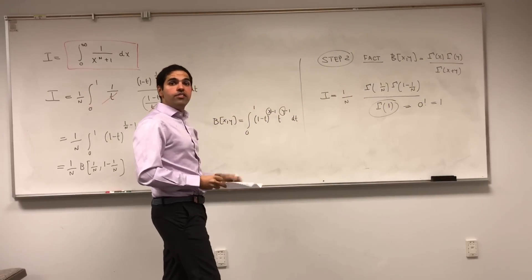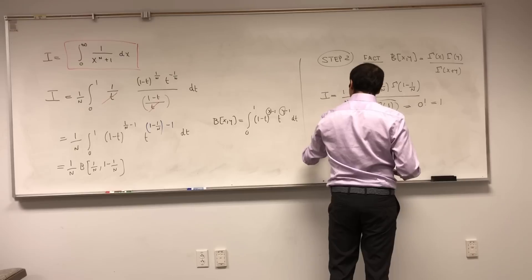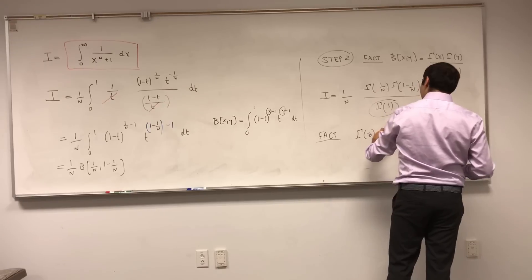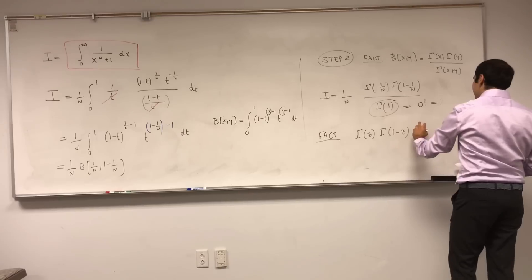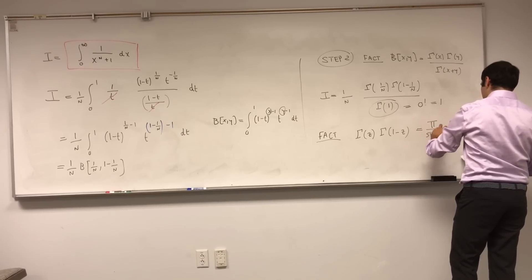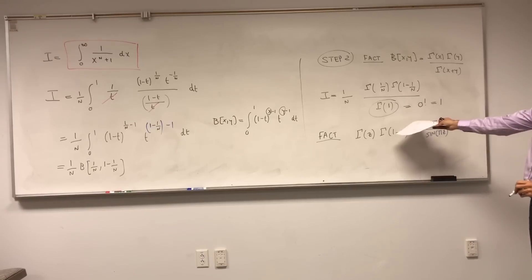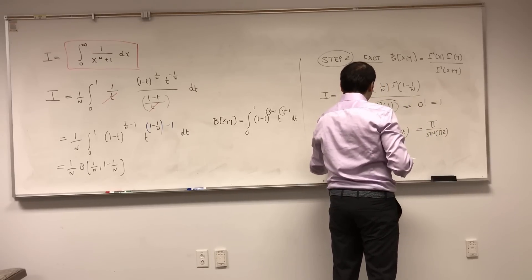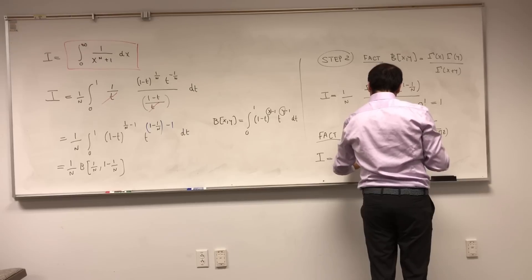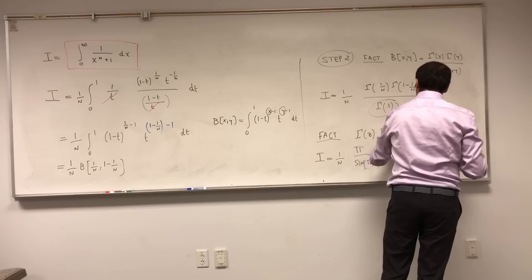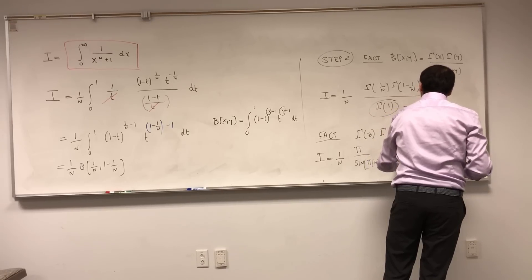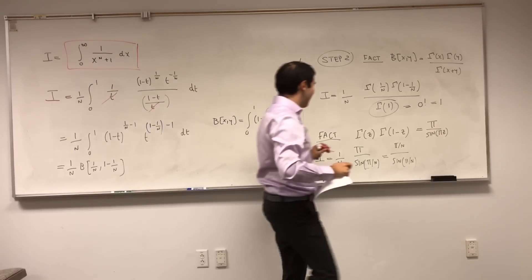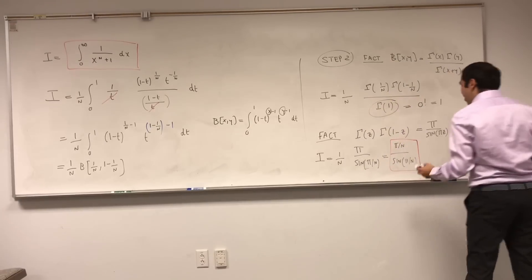And it turns out the numerator is also easy to calculate. I've either done this or will do in a future video - in general, gamma of z times gamma of 1 minus z is pi over sine of pi z. In fact, this is exactly what we have here but with 1 over n. So I is 1 over n times pi over sine of pi over n, which is pi over n sine of pi over n. Whoa, how cool is that? We have shown that our integral is pi over n sine of pi over n, and without using a single complex number.